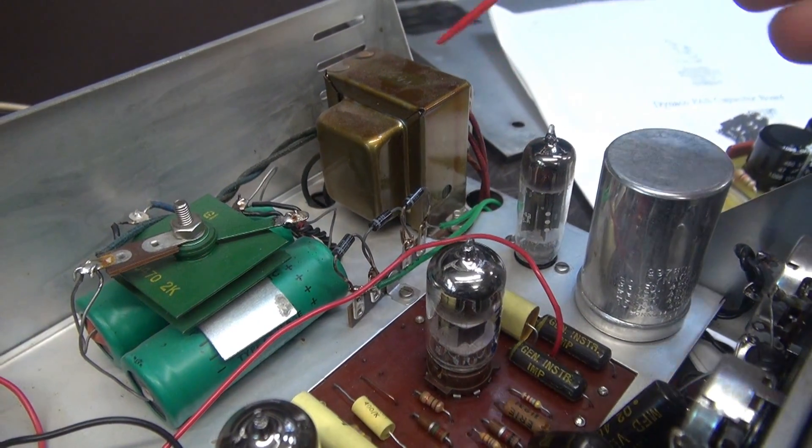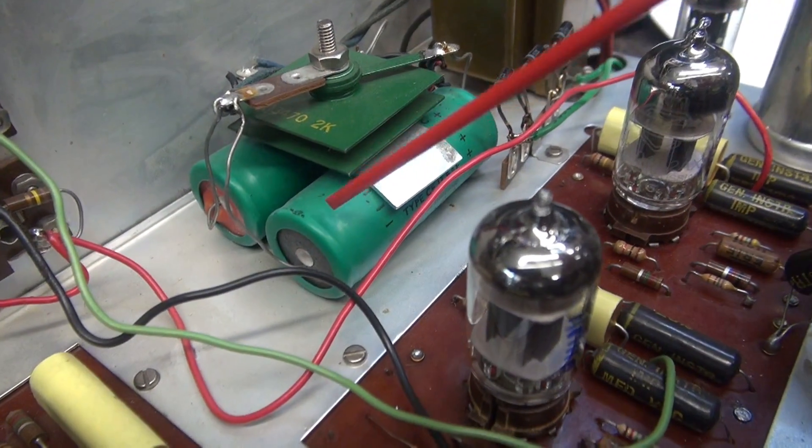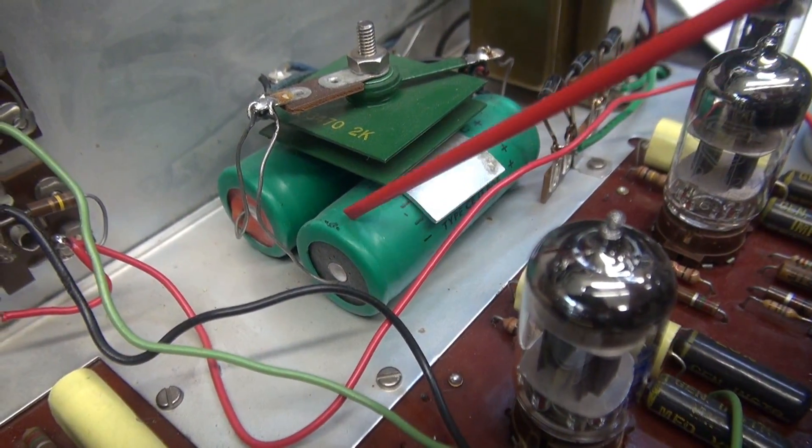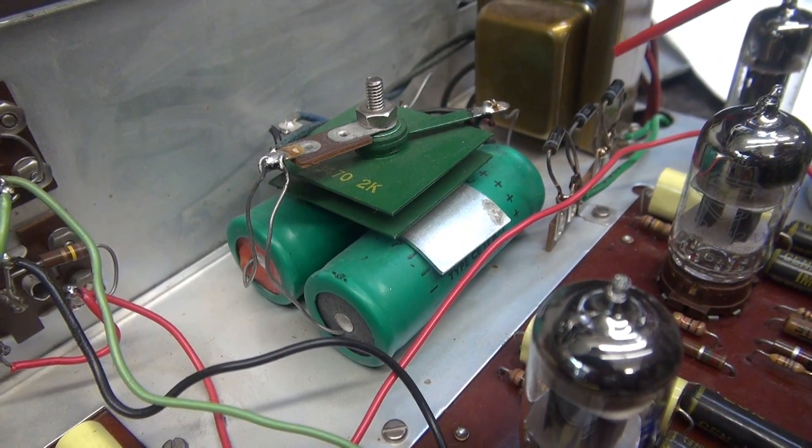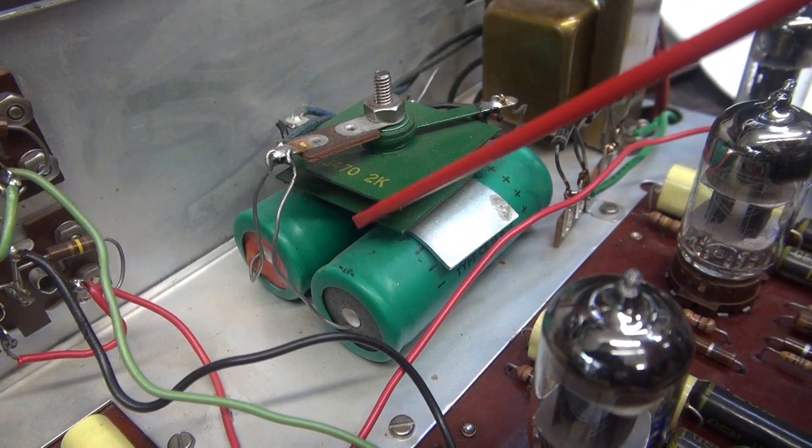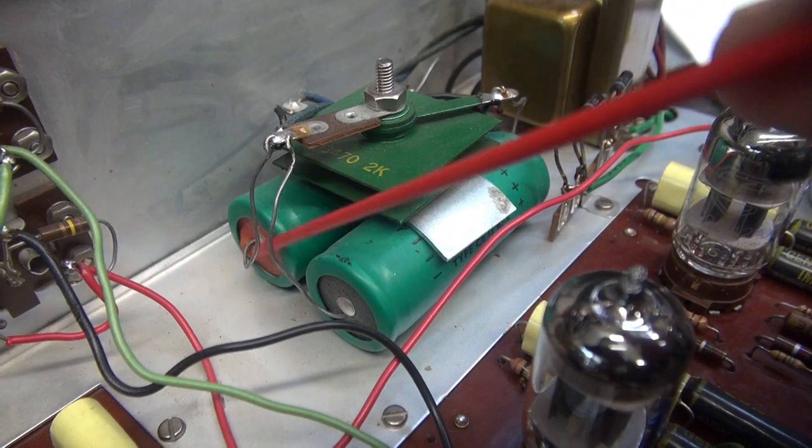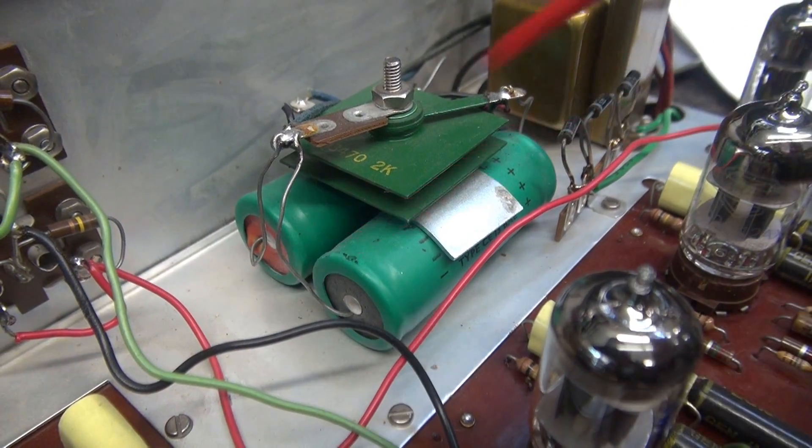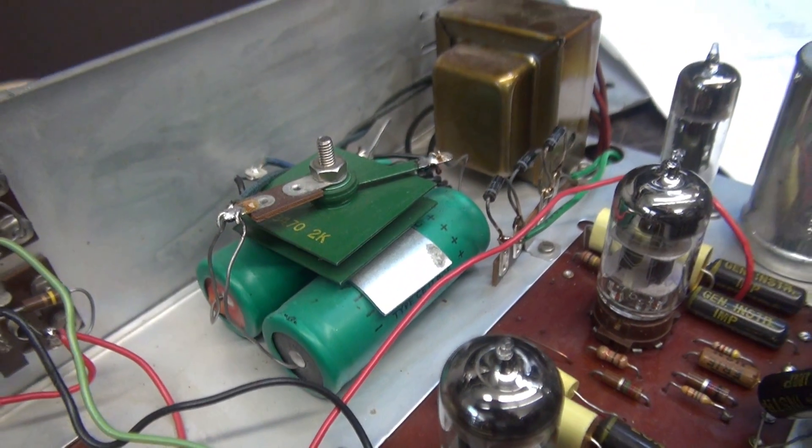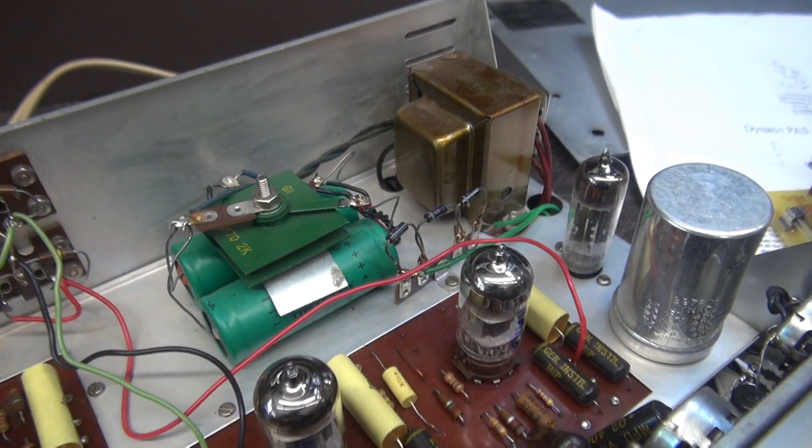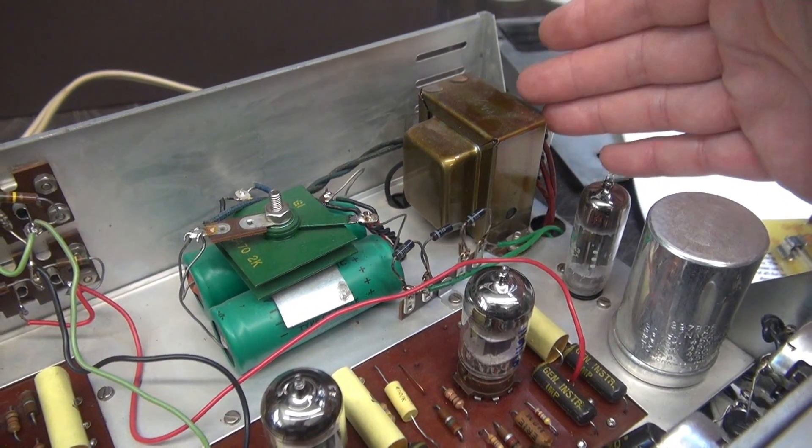The other point of failure, obviously, are these filter caps on the 12-volt supply. Same deal. We already know we're at the edge, right, on the filament current available. Now, let's rectify it and throw it into some leaky caps, like this one. Look down there. See that big popper hanging out of the nose of it? Yep. They're going to leak, pull excessive current, and take out your power transformer.